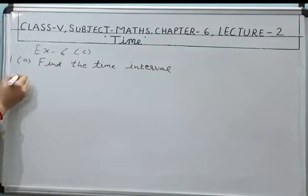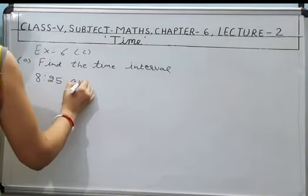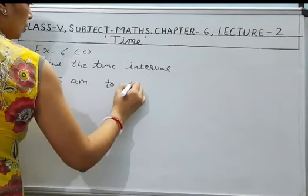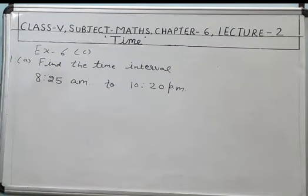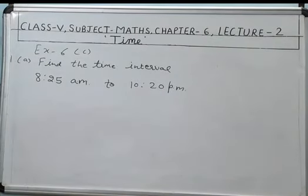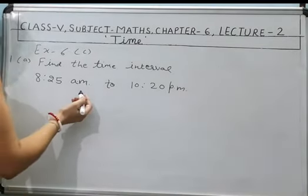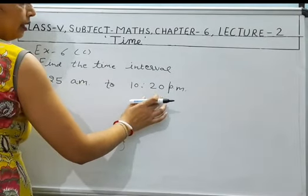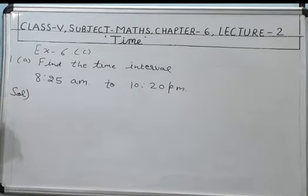This I will explain you how to find 8:25 AM to 10:20 PM. We have to find the time interval. So to find out the time interval we have two methods: one is in the form of flow chart, and second is we can convert this into 24 hour clock time and after that we can do subtraction.